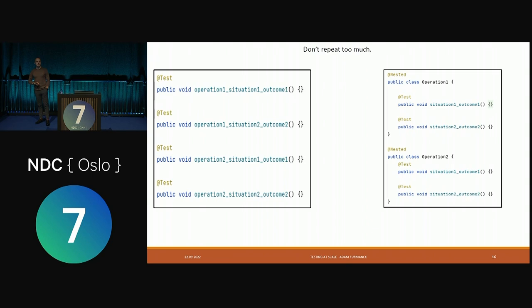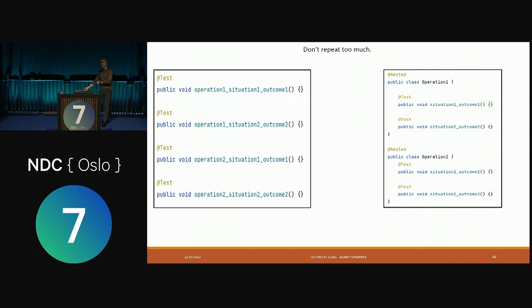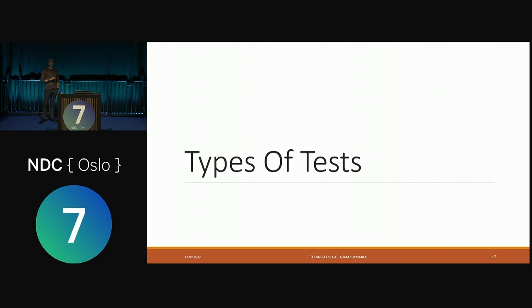There's also the well-known naming convention — operation, situation, outcome. But instead of writing that in every test name, use nested classes to extract the operation name and avoid repetition. These little tricks help you understand your code much better. It depends on the testing framework and language — whether plain C# or something more sophisticated — but generally, think about your tests and don't blindly follow internet tutorials, which show an easy way but not necessarily a maintainable one.